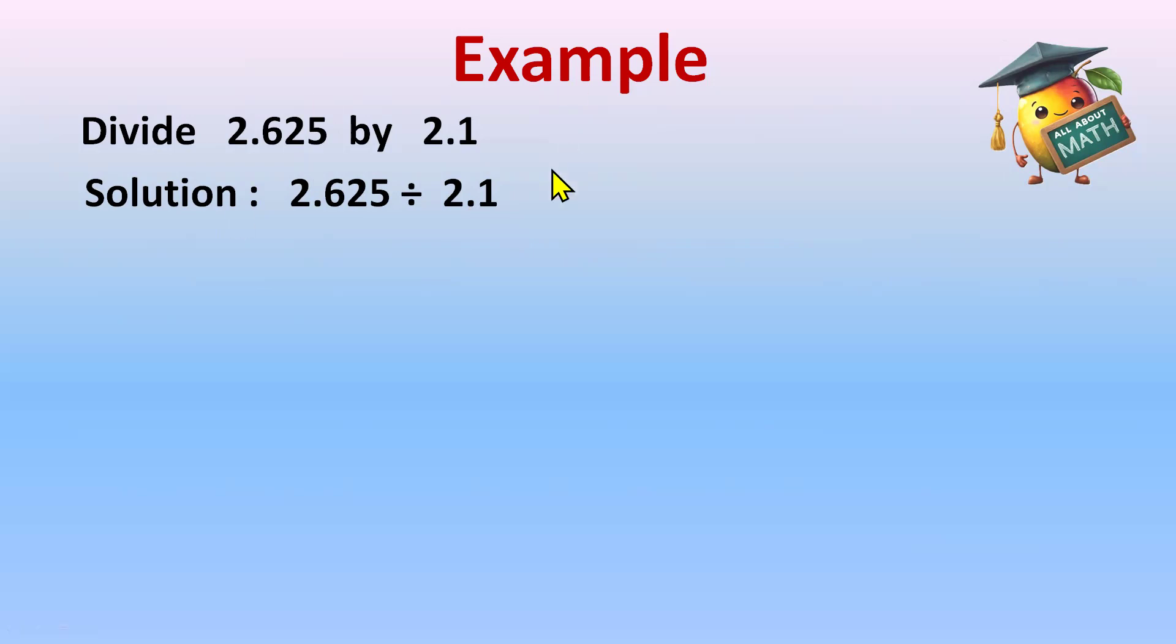So it will shift one digit only forward. Whatever we are doing in the divisor, the same will be done in the dividend. So the decimal will shift one digit in the dividend as well. We will have 26.25 divided by 21.